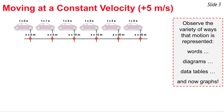We'll begin our discussion of position-time graphs by considering a car moving to the right with a constant velocity of 5 meters per second. We see a picture of the car's position at 1-second intervals of time, with the origin defined as the front tire of the car at t equals 0 seconds. Moving at 5 meters per second, at 1 second it will be at the 5-meter mark, at 2 seconds at the 10-meter mark, then 15, 20, and 25 meters.